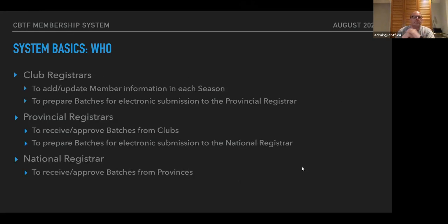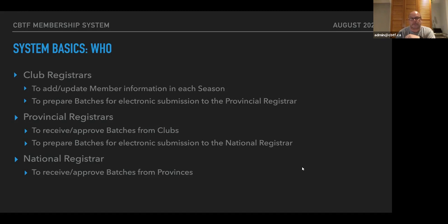Who gets involved with this new system? We've got club registrars, provincial registrars, and the national registrar — those are the main key players. Club registrars' role is to add and update member information for each season and to prepare the batches that are electronically submitted to their provincial registrar for approval. Provincial registrars will receive and approve those batches from the clubs, prepare batches for their province to be electronically submitted to the national registrar, and also look after member information for all unaffiliated members in their province. The national registrar's role is simply to receive and approve the batches from the provinces.